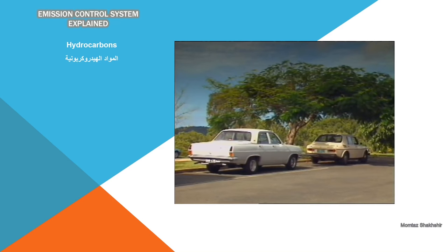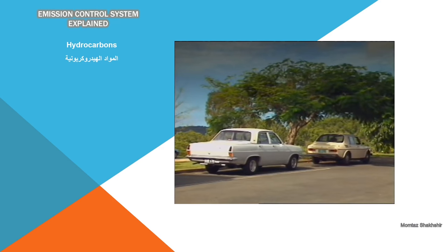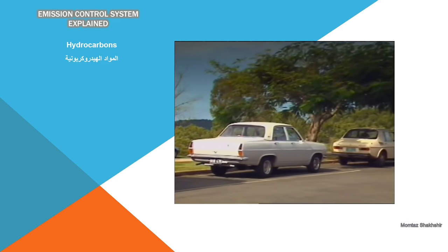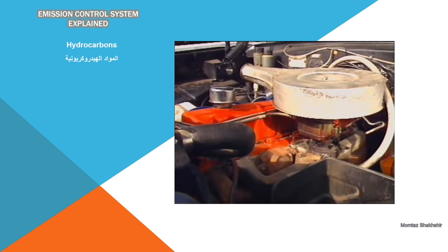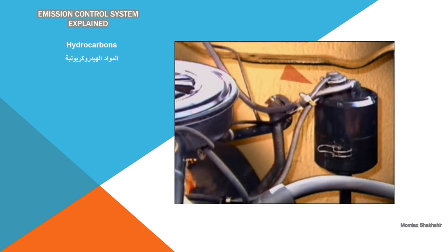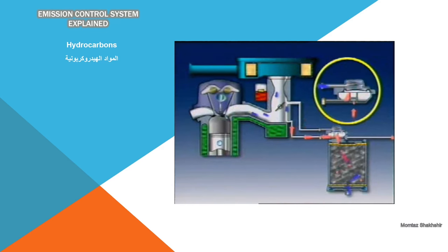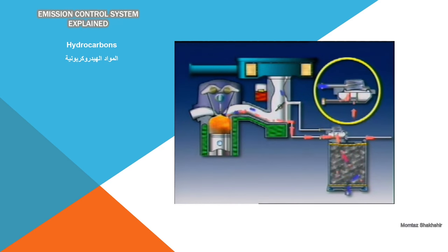When the vehicle is left in the sun, its temperature increases and fuel evaporates from the tank and, if there is a carburetor, from it as well. An evaporation control system is fitted to modern vehicles to collect and store the hydrocarbon vapors from the tank and the carburetor. Then, when conditions are suitable, these vapors are drawn into the intake manifold and burned as part of the combustion process.